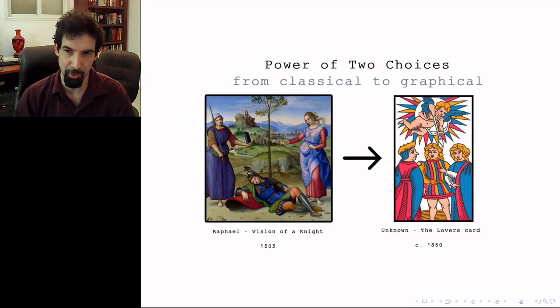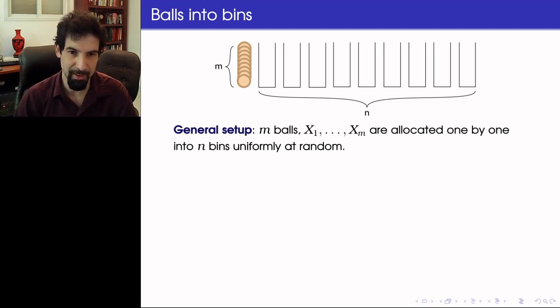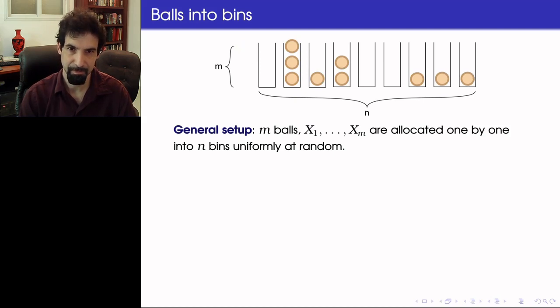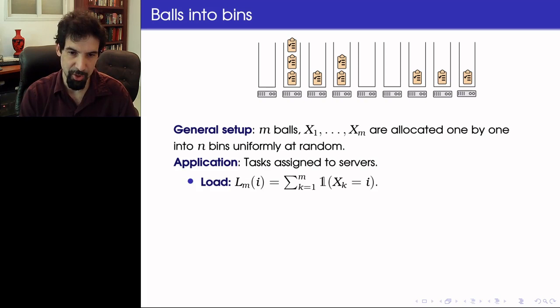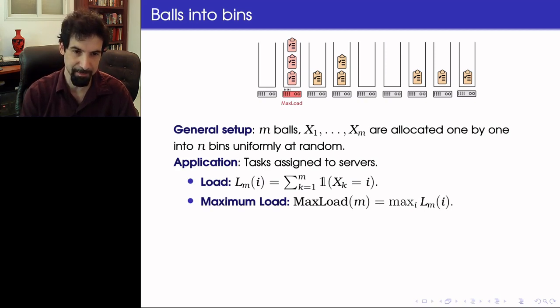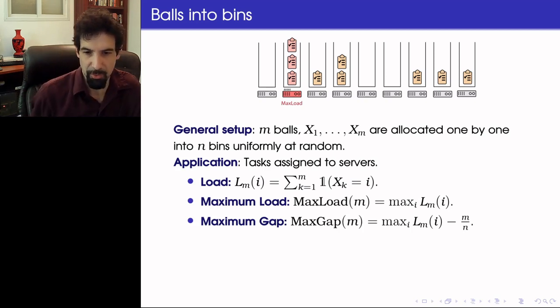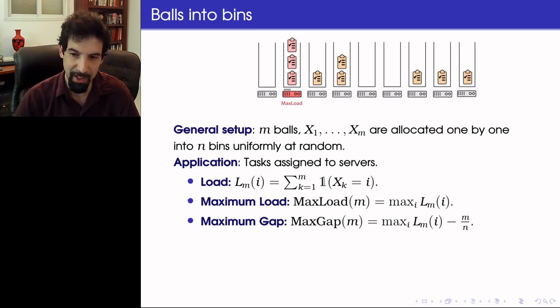Let me begin by recalling the power of two choices in the classical balls and bins model, and how this model was developed into graphical balanced allocation. The general setting is that N balls are allocated one by one into one of N bins, chosen uniformly at random. We consider this as a model for tasks being assigned to servers, where balls represent tasks and bins represent servers. In this context, we consider the load of each server, which is the number of balls allocated to it, and the maximum load, which is the maximum of all the loads. We also look at the maximum gap, the difference between the maximum load and the average load. As we must have at least one bin which is at least averagely loaded, this number is non-negative.